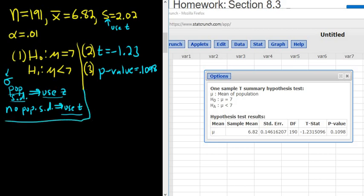Step four, we have to decide whether or not to reject or fail to reject the null hypothesis. So if the p-value is smaller than alpha, we reject. If it's bigger, we fail to reject. So in this case, our p-value is bigger than our alpha. So we fail to reject h sub 0.